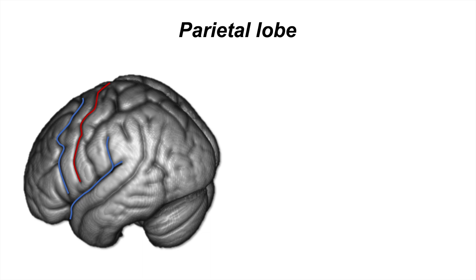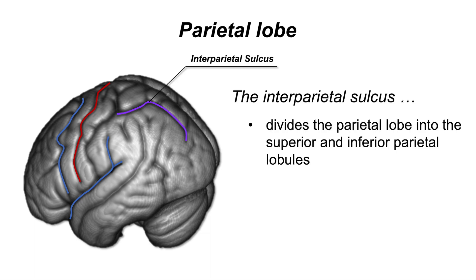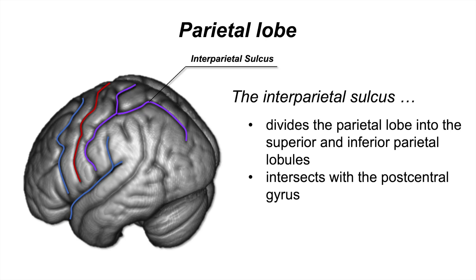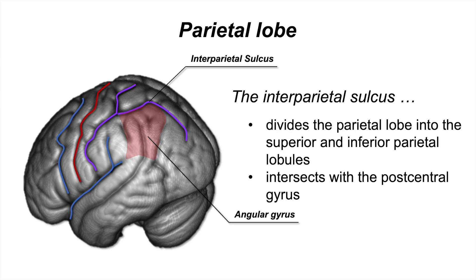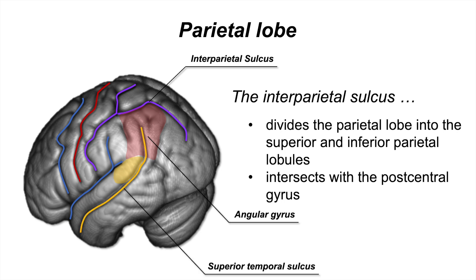Next, I would like to move to the parietal lobe. The intraparietal sulcus divides the parietal lobe into the superior and inferior parietal lobules. The intraparietal sulcus intersects with the postcentral gyrus, which is the posterior border of the postcentral gyrus. The inferior parietal lobe consists of the supramarginal gyrus and the angular gyrus. The angular gyrus is known to be in proximity to Brodmann's area, thus functioning as one of the hubs for the language network. The superior temporal sulcus runs from the anterior segment of the temporal lobe into the angular gyrus in the parietal lobe.